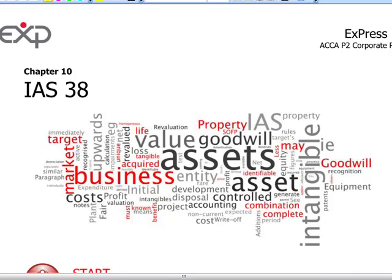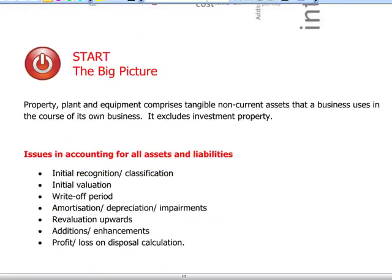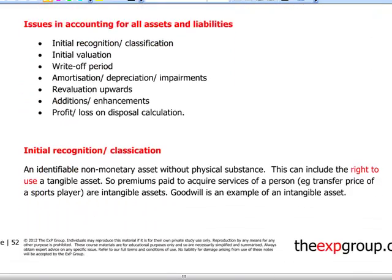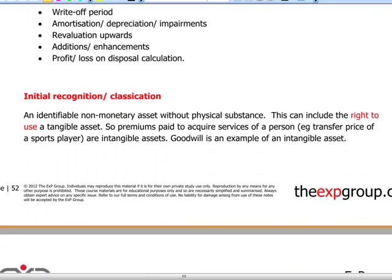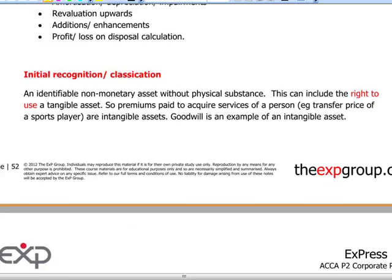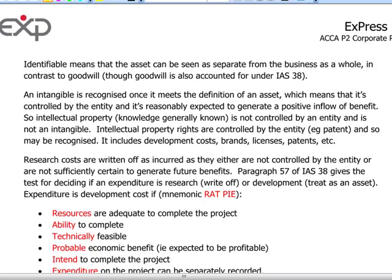IAS 38 deals with intangible assets. Under the scope of this standard we include any identifiable non-monetary asset without physical substance, because if the asset is monetary we will account for it under financial instruments. This includes the right to use a tangible asset — for instance a licence — which will be accounted for under IAS 38. Goodwill is another example of an intangible asset.